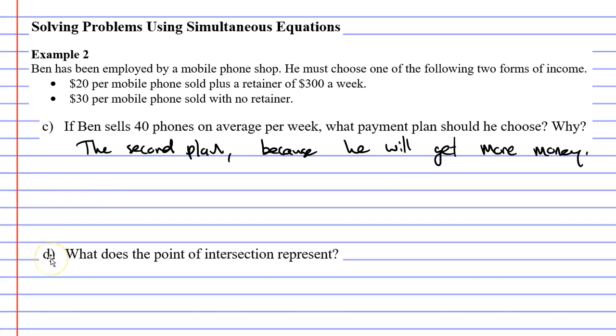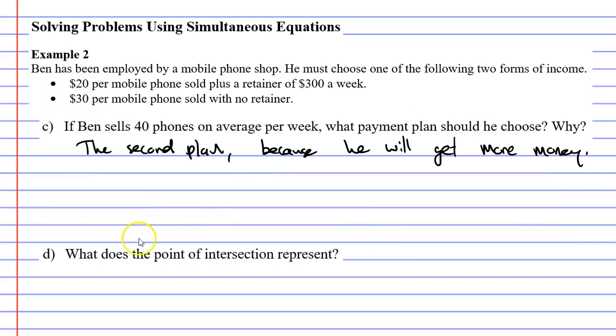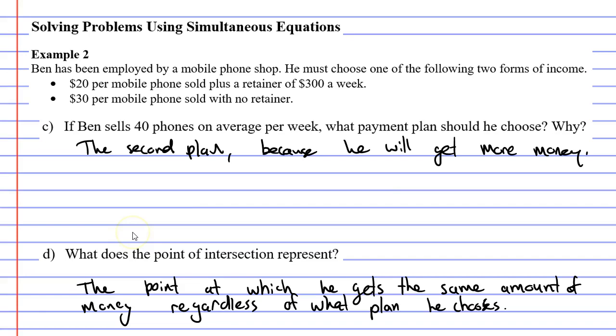Last of all, question D. What does the point of intersection represent? The point of intersection was here where 30 phones were sold and Ben received $900. Now, this point of intersection represents the point at which he gets the same amount of money, regardless of which plan he chooses. So we'll write that down. Anyway, that concludes our lesson on example two. Remember to read the description below for links to work booklets that relate to this video.